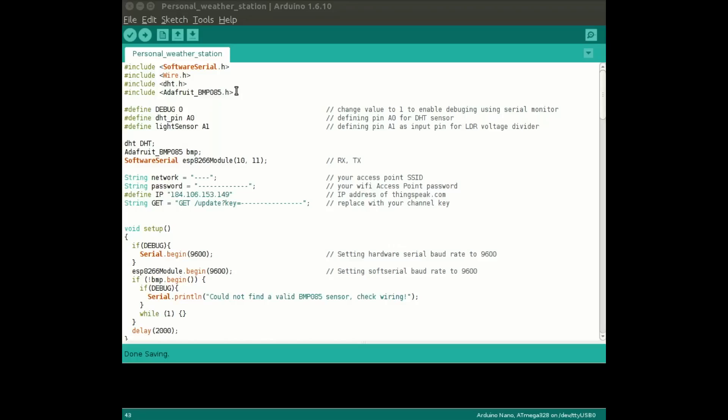So let's look at the code. Code of personal weather station is fairly simple - just a bunch of library declarations, namely SoftwareSerial, Wire, DHT, and Adafruit BMP085, then a bunch of defined variables, then a bunch of objects of the type Adafruit_BMP085 and SoftwareSerial. In this statement you need to enter your SSID of your WiFi network and the password of your WiFi router and the API key of your ThingSpeak channel.